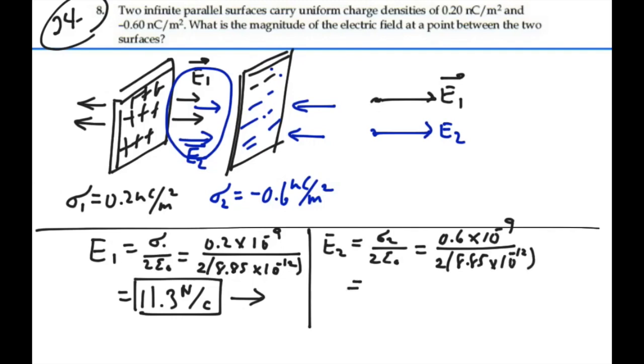So that is going to give me, it should be 3 times the other field, but let's just do it. 0.6 times 10 to the minus 9, divided by 2, divided by 8.85, times 10 to the minus 12, and that is 33.9 newtons per coulomb. And that is also to the right as we look between these two sheets.